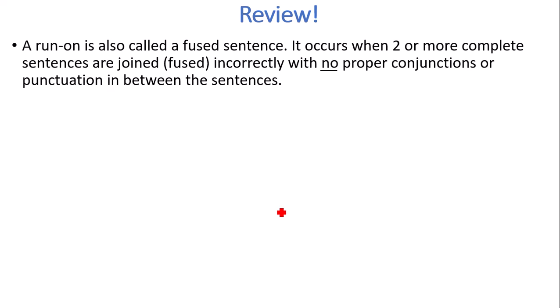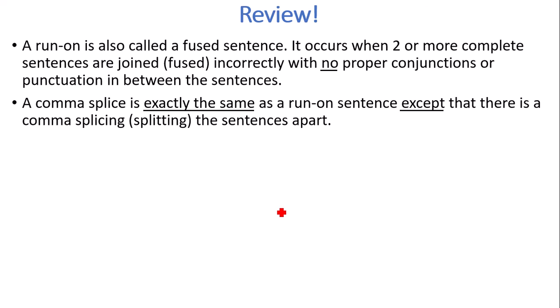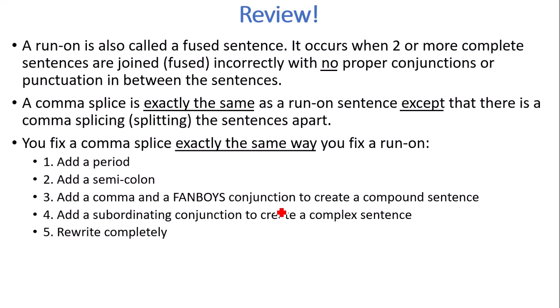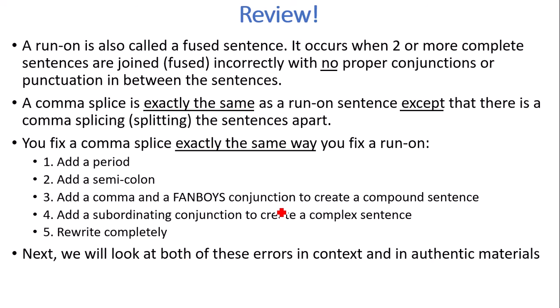So let's review. A run-on is also called a fused sentence. It occurs when two or more complete sentences are joined or fused incorrectly with no proper conjunctions or punctuation between the sentences. A comma splice is exactly the same as a run-on except there is a comma splicing or splitting the sentences apart. You fix a comma splice the exact same way you fix a run-on: add a period, add a semicolon, add a comma plus a FANBOYS conjunction, add a subordinating conjunction to create a different type of sentence, or reword completely. Next we're going to look at these errors in context and then authentic materials. I hope this explained the terms and you can understand better what a comma splice is. If you need more information, ask me in the comments and I will try to answer.